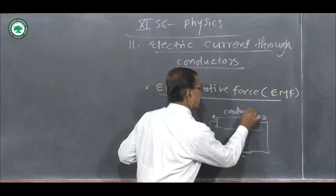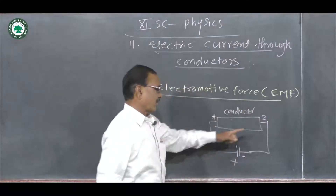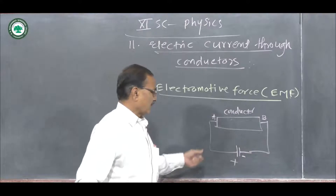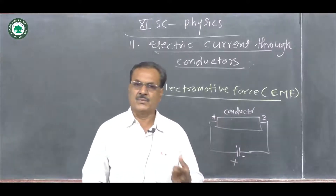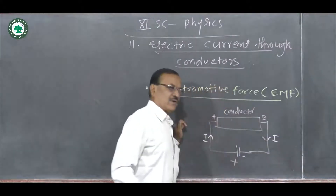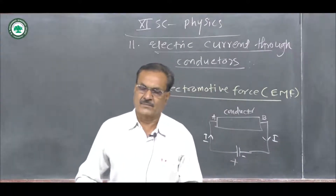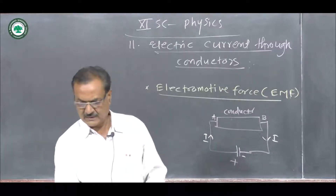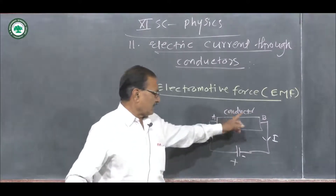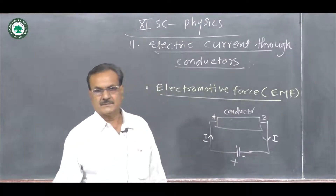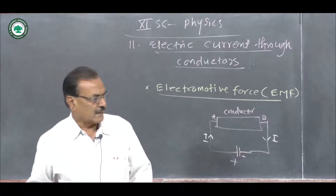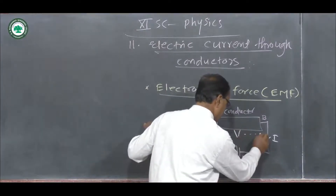The electrons flow from point B to point A. At the same time, the positive charge moves from A to B, and this is nothing but electric current. The direction of conventional current from point A to point B is in the opposite direction to the electrons. When electric current flows through this conductor, the conductor has a certain resistance, and across the conductor a potential difference is produced.